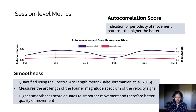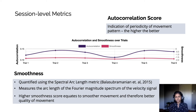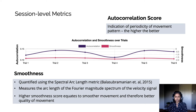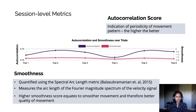For our session-level metrics, we use two measures for a general view on the user's performance across trials within each session. The autocorrelation score is an indication of periodicity of movement pattern, and the smoothness score indicates how smooth the user's movement is. This is computed by the spectral arc length metric, which measures the arc length of the Fourier magnitude spectrum of the velocity signal. In both cases, the higher the score, the better.